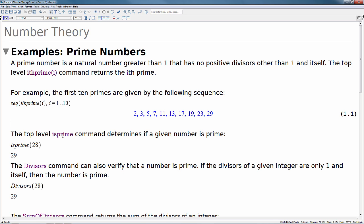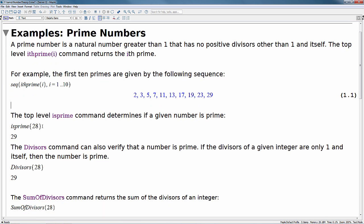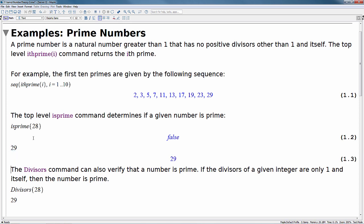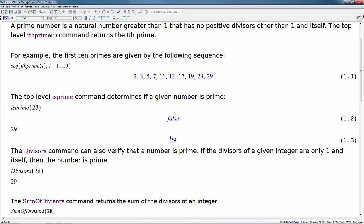The top-level isprime command determines if a given number is prime. This will return false if a number is not prime and true if a number is prime. So if we use the isprime command on the value 28, we can see this returns the value false. I'll show you this as well through the context menu. So if we right-click instead of using the command isprime.